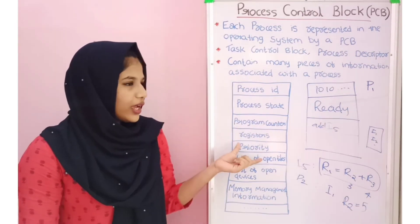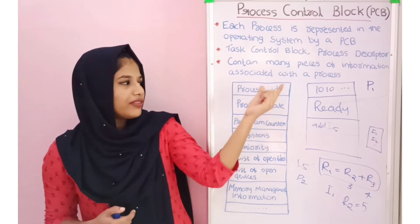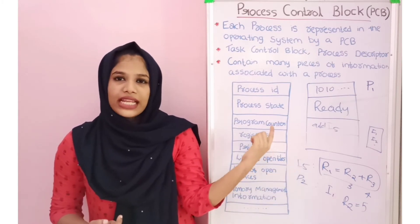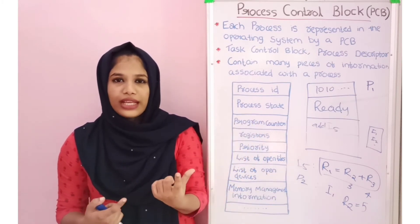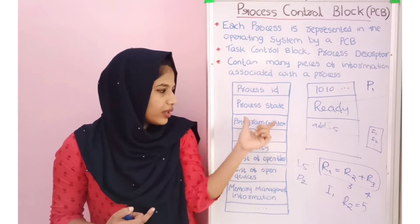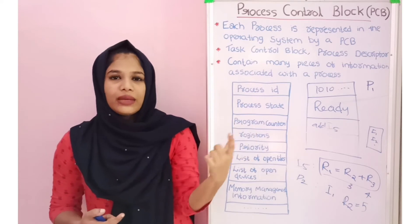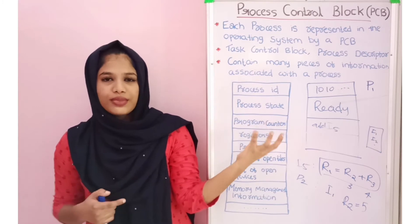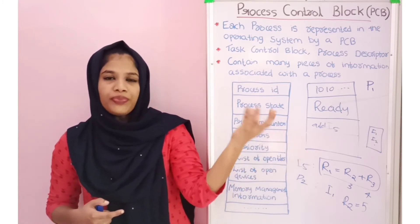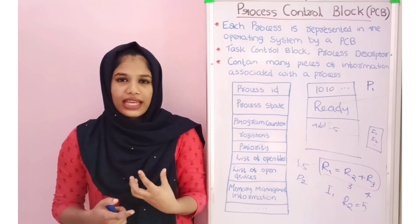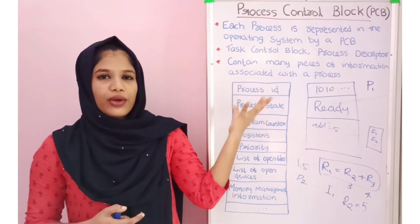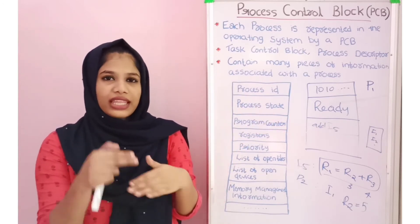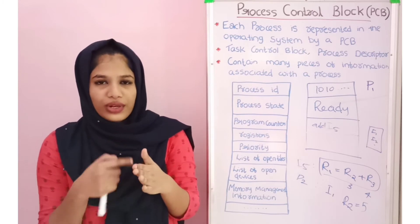Next is the priority field. We can see the priority information for each process. System processes, called system software, have higher priority. User processes, called applications, have lower priority. We can assign priority in the system process and use it for scheduling decisions.